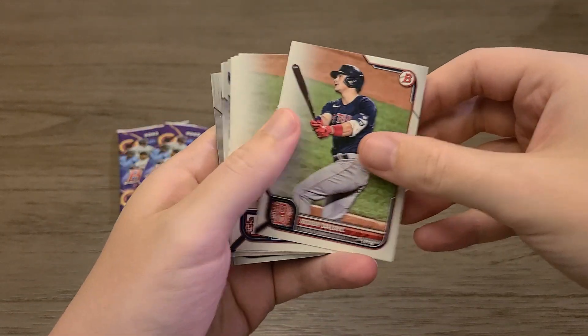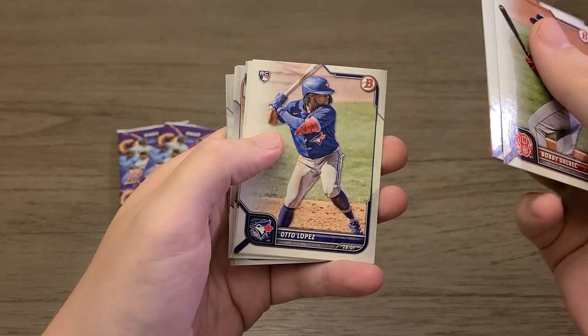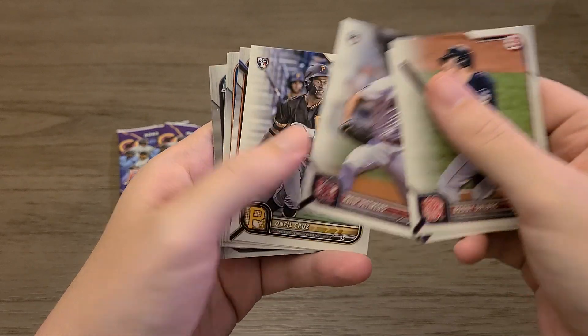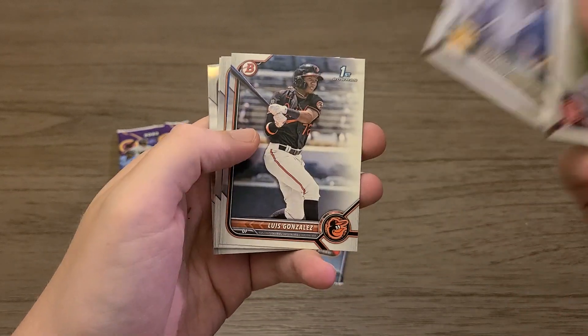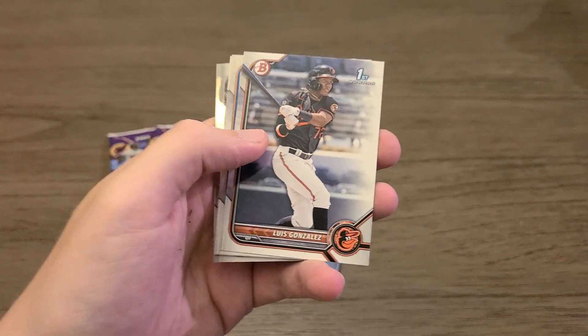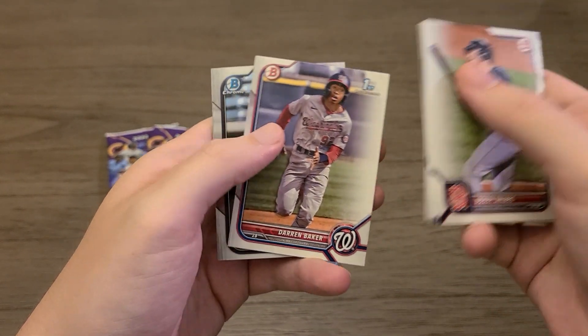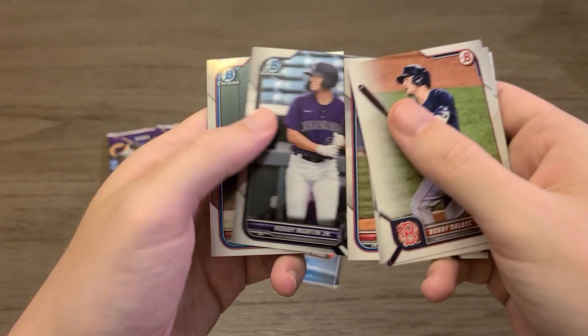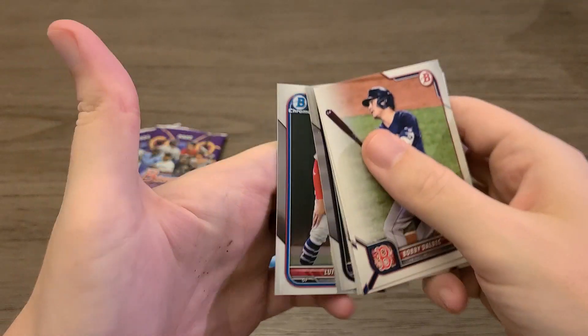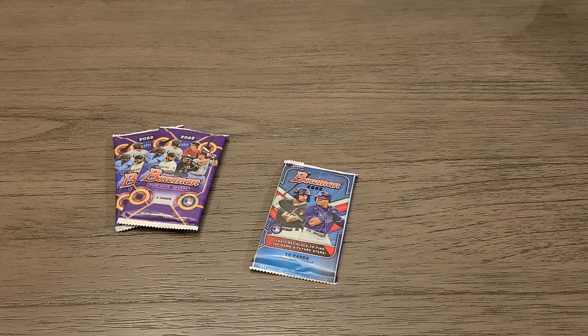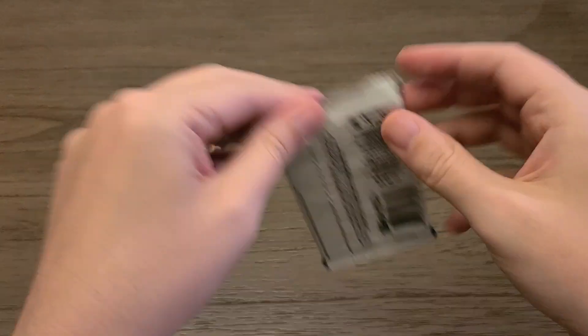Probably not. I thought that was another J.D. Martinez. Adolfo Garcia, Reid Detmers, O'Neil Cruz rookie, that's not horrible. Luis Gonzalez first, Francisco Alvarez, Darren Baker first, Robbie Martin and a Luis Rodriguez. I got a little black there on my hand. And the last base pack.